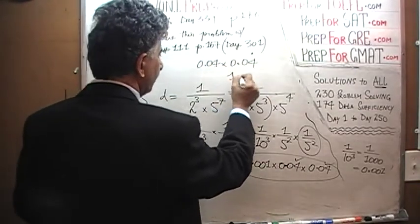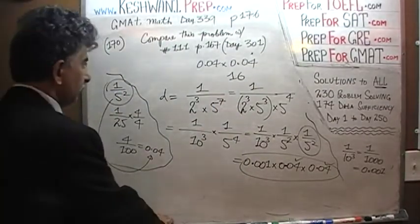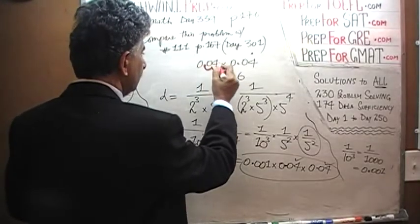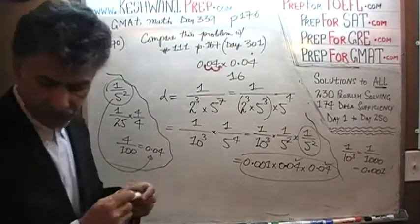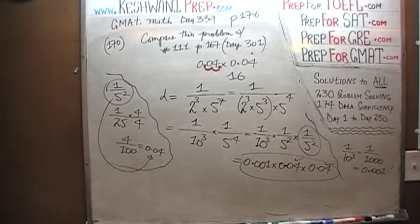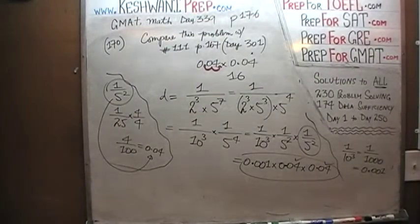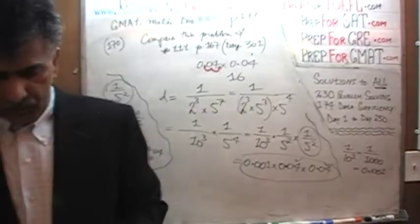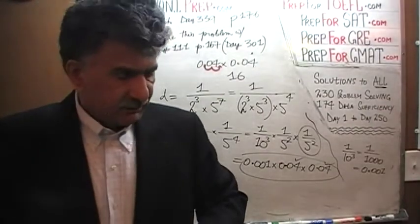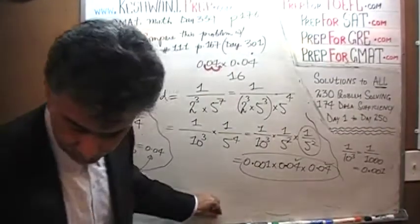0.04 has two decimal places and the other 0.04 also has two decimal places. Two times two is four, so we move the decimal four places in our product 16. The result is 0.0016. By the way, I finally changed the red marker I had been procrastinating on — it feels much better.